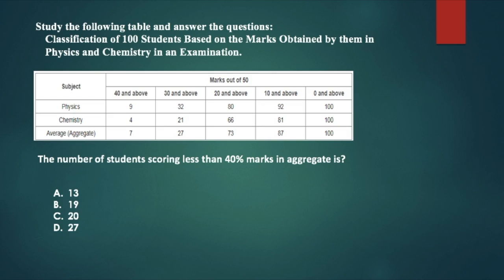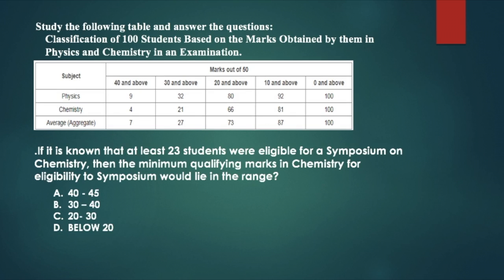Because 10% of 50 is 5, 20% is 10, and 40% is 20. So the number of students scoring 20 and above is 73. That means 100 minus 73 equals 27 students who have scored less than 40% marks in aggregate. You have to keep that in mind.